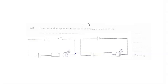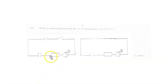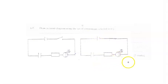We have to draw a circuit diagram using the set of components selected in part C — using the cell, capacitor, and resistor. This is how the diagram will look. The diagram consists of the capacitor, the resistor, and then the cell. For a complete diagram you receive three marks.